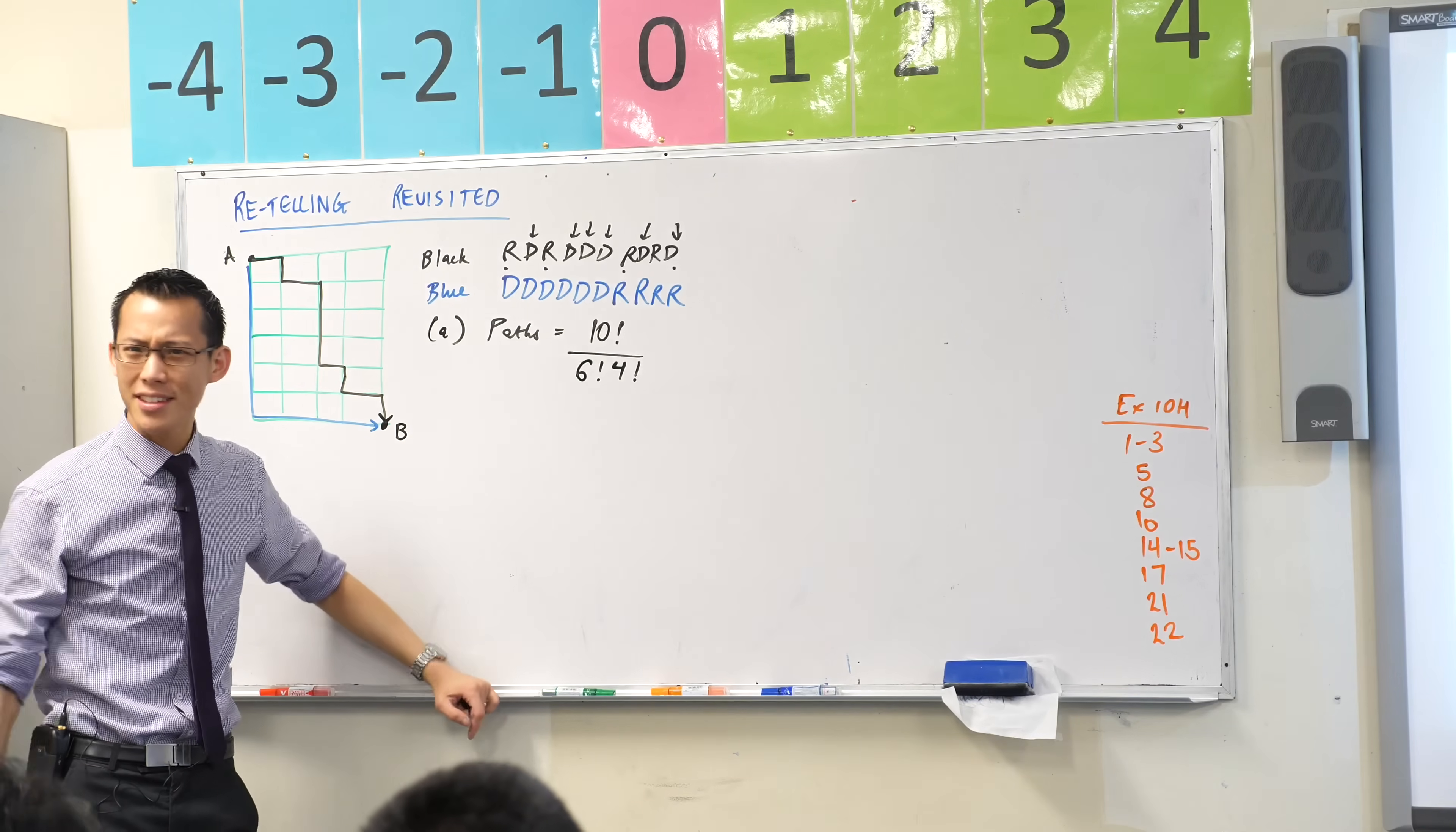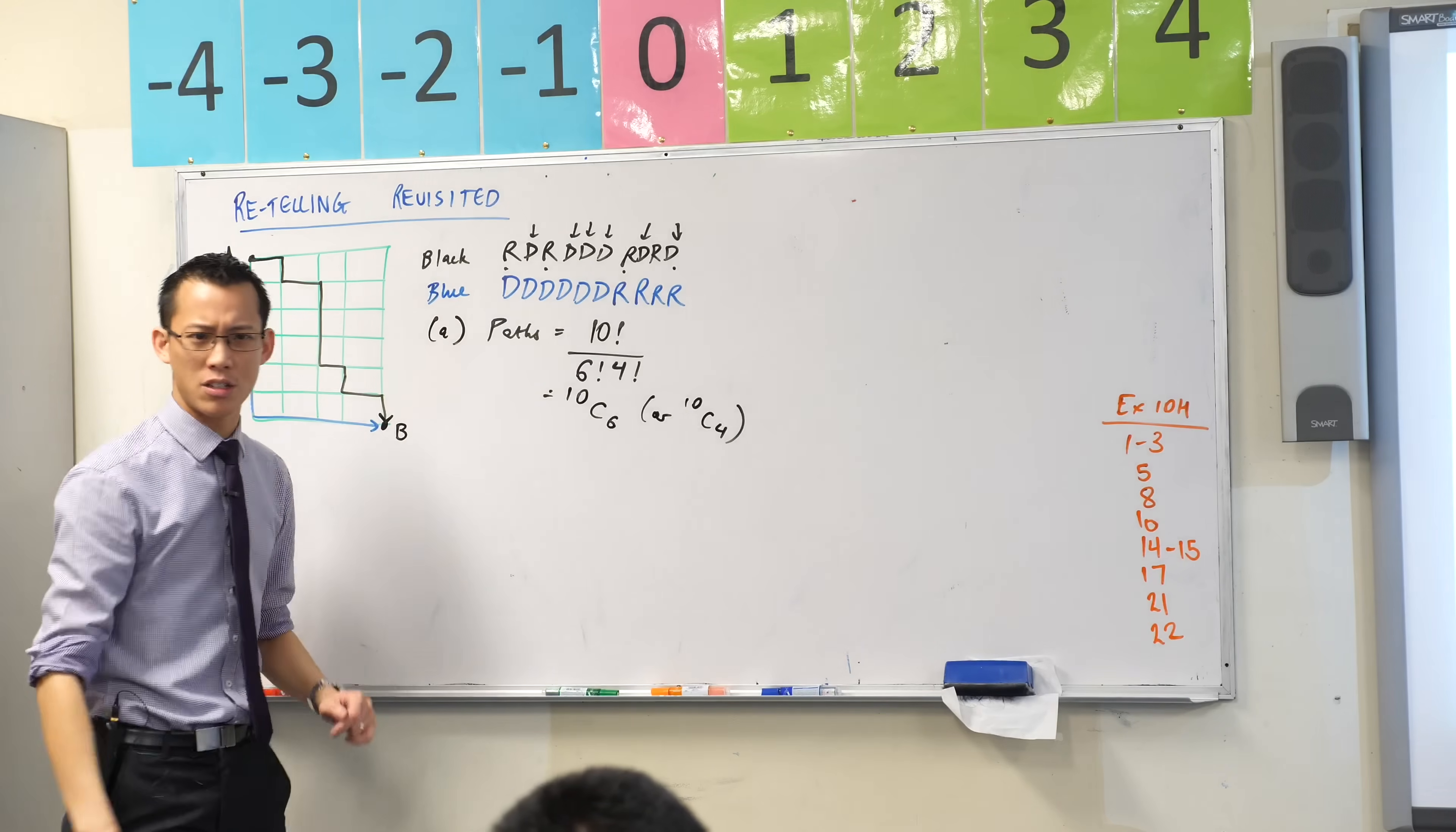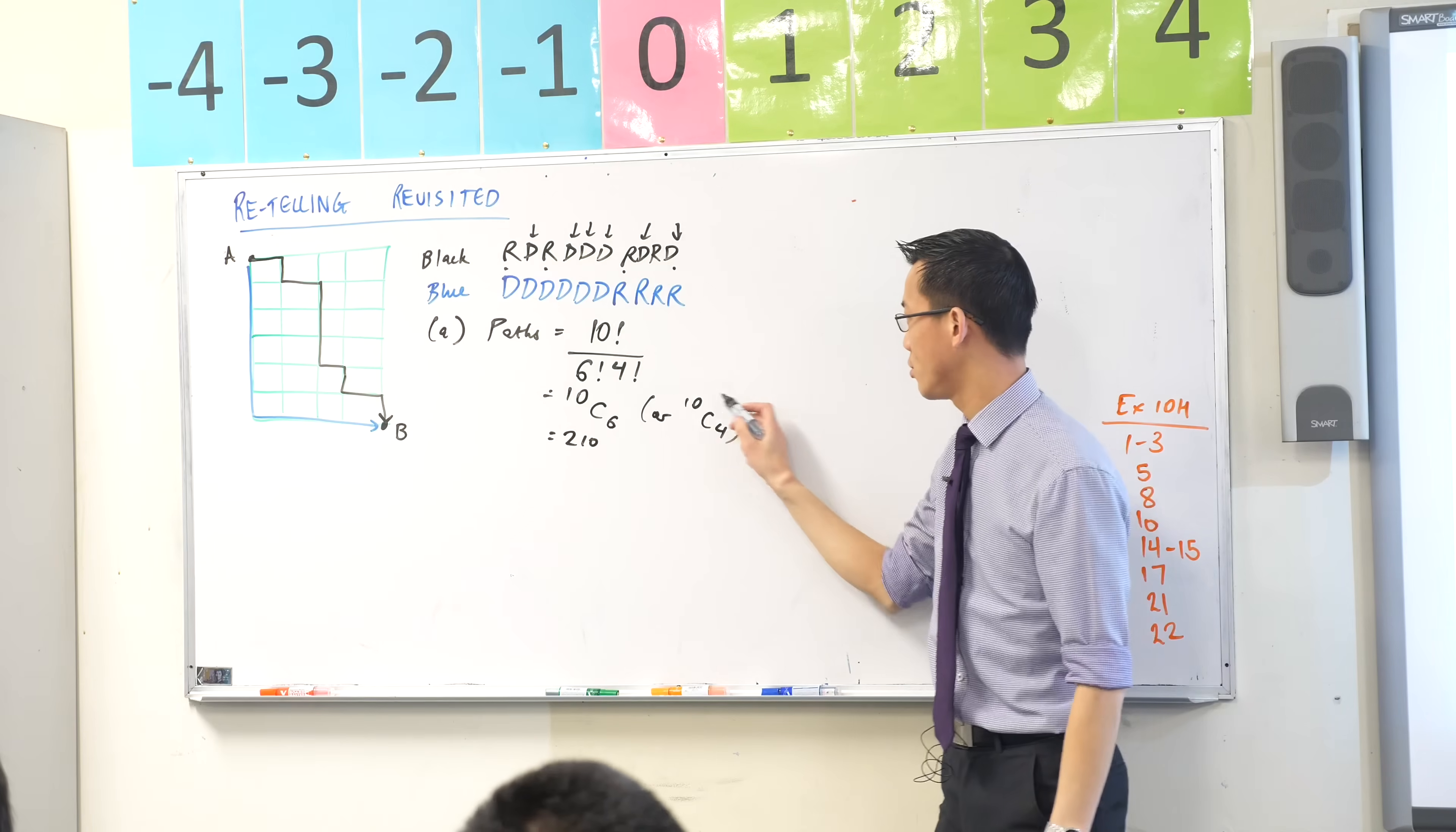By the way, we have notation for this that can get us there quickly. How would you say that? This is 10 choose 6, or you could also call it 10 choose 4. Now this will give us an answer. I think it's 210. But I'm interested in, I didn't think of it as this to begin with. Can you tell me a story for how this is equivalent to say this?